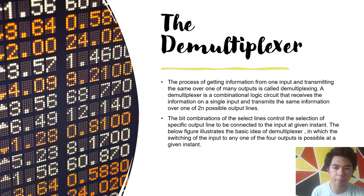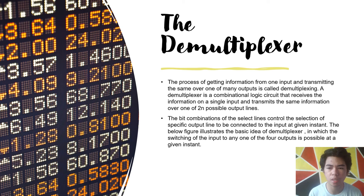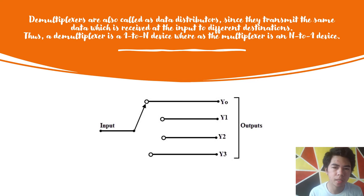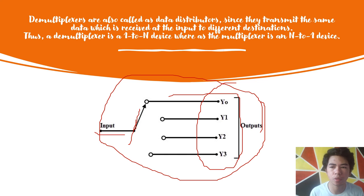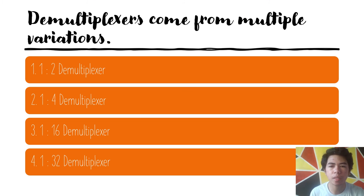The demultiplexer is the process of taking information from one input and transmitting it over one of many outputs. A demultiplexer is a combinational circuit that receives a single input and routes the same information over multiple output lines. Unlike a multiplexer which has many inputs and one output, the demultiplexer has one input and many outputs. Demultiplexers come in multiple variations: 1-to-2, 1-to-4, 1-to-16, and 1-to-32.